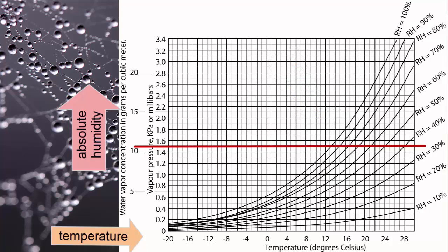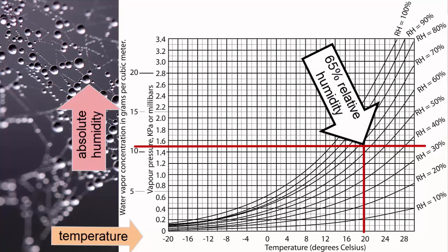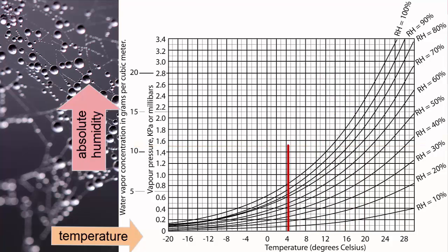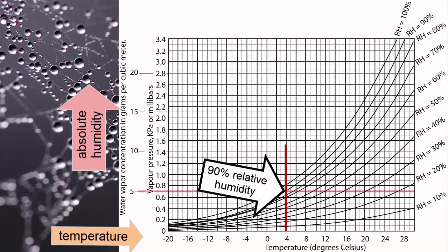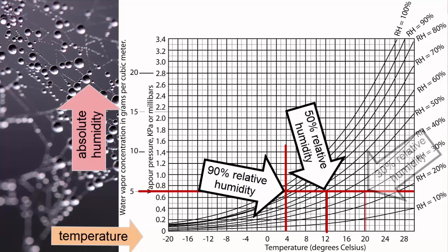At that same concentration of water but a higher temperature, such as 20 degrees Celsius, the relative humidity would decrease. An air mass at a temperature around 4 degrees Celsius would reach 90% relative humidity at a vapor concentration of 5 grams per cubic meter — a concentration that would put 12 degrees Celsius air at 50% relative humidity, and 20 degrees Celsius air at only 30% relative humidity.